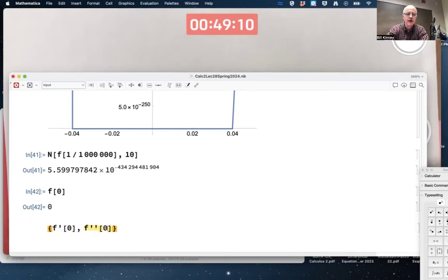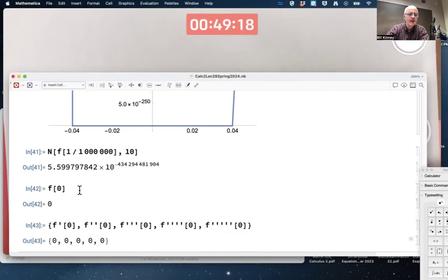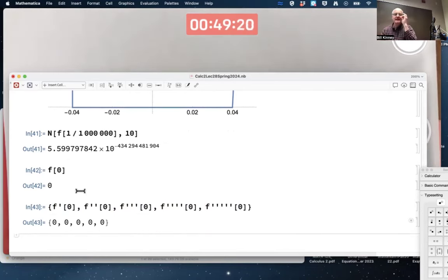The first and the second derivative and the third derivative and the fourth derivative. One more for good measure: fifth derivative. Mathematica is claiming they all exist and they're all zero, which kind of makes sense. The graph is basically horizontal near the origin, not actually horizontal, but so close that it's believable that all these derivatives are zero.